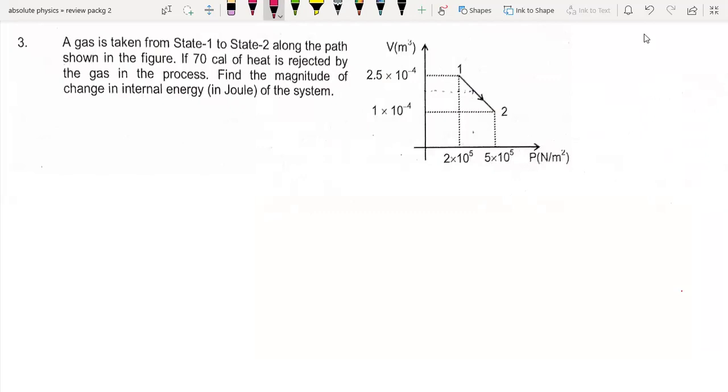Hi all my viewers, welcome back to my channel. Today we will solve this question from Physics JEE Mains review practice 2. This question is from thermodynamics. The question is: A gas is taken from state 1 to state 2 along the path shown in the figure. If 70 calories of heat is rejected by the gas in the process